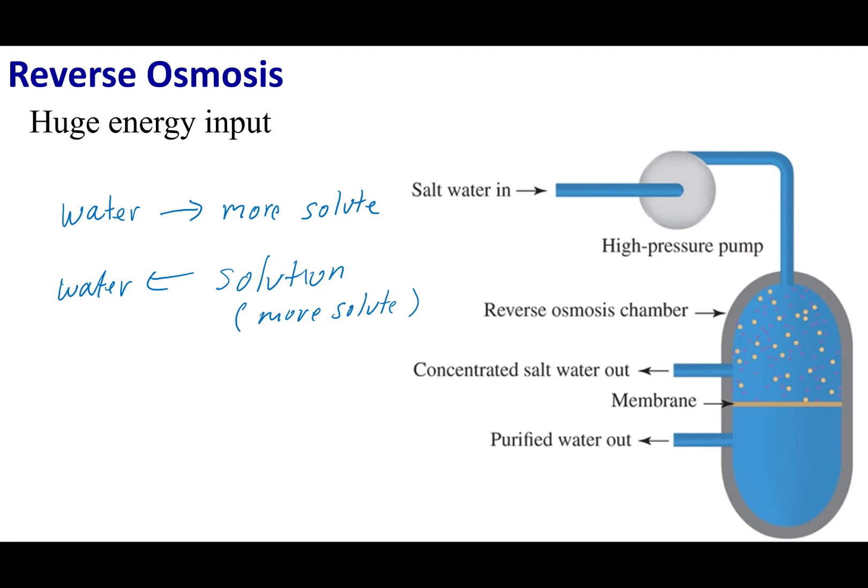So if you go to a desalination plant, this is what they do. They are going to bring in salt water from the ocean and pump this salt water into a tank. They're going to have a semi-permeable membrane. And what they're going to do is apply a ginormous amount of pressure. So I'm going to separate or filter out all the particles or all the solute and leave pure water on the bottom.